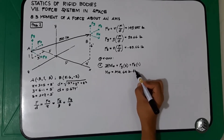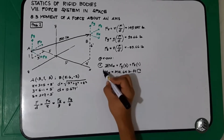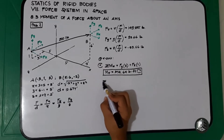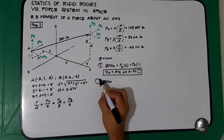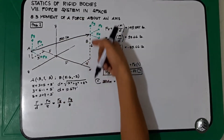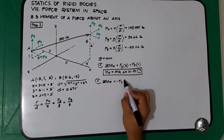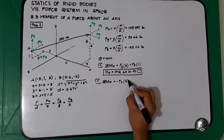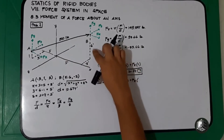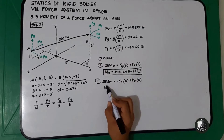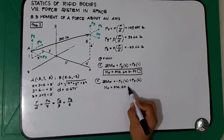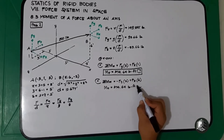Since the result is positive, the rotation is clockwise. To verify using point B: summation of moment at x (clockwise positive) — Fy rotates counterclockwise so negative Fy times 2 feet, plus Fz rotates clockwise so positive Fz times 6 feet. The moment at x is the same: 374.64 pound-feet, clockwise.